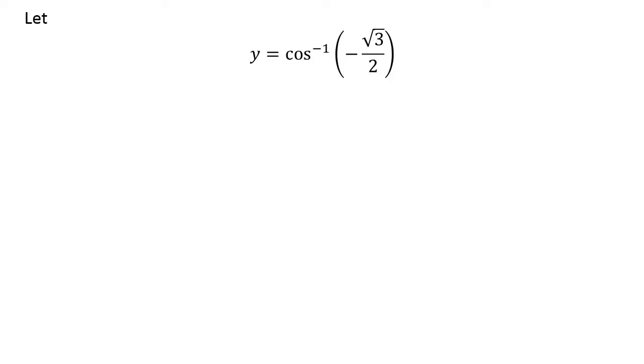Let us assume y is equal to inverse cosine of minus square root of 3 upon 2. We know the range of the inverse cosine function is the closed interval of 0 and pi, so the value of y lies in the closed interval of 0 and pi.